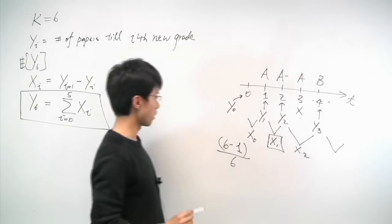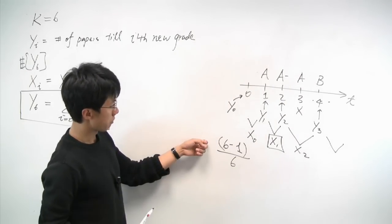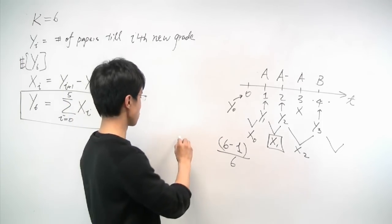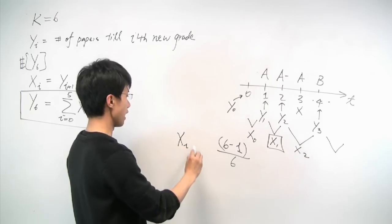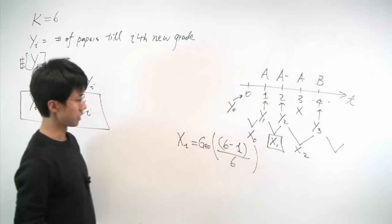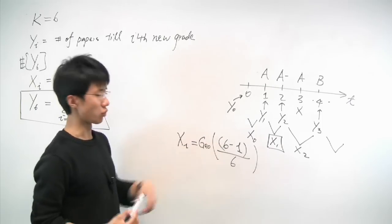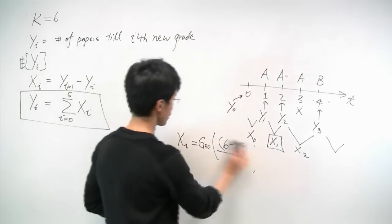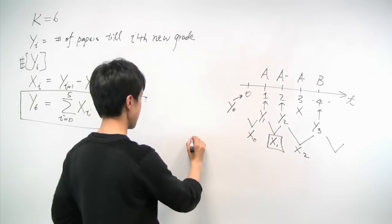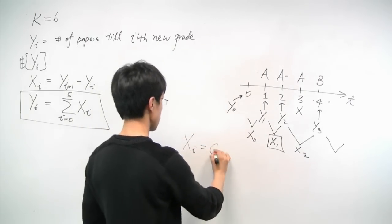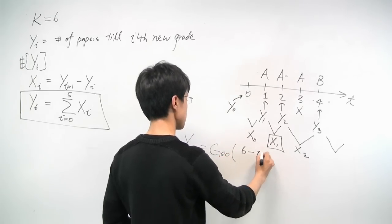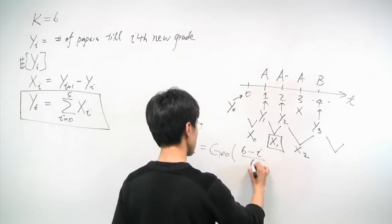And therefore, on any random trial after that, there is a probability of 5 over 6 that we'll see a new grade. And hence, we know that x1 has a distribution geometric with a success probability or parameter 5 over 6. Now, more generally, if we extend this idea further, we see that xi will have a geometric distribution of parameter (6-i) over 6.